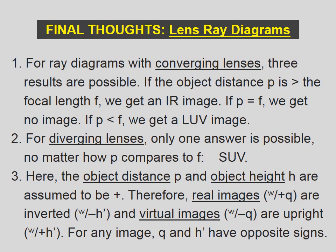The object distance p and the object height h are assumed to be positive. Therefore, real images with positive q's are inverted with negative h primes. Virtual images, which have negative q's, are upright with positive h primes. For any image, q and h prime have opposite signs.